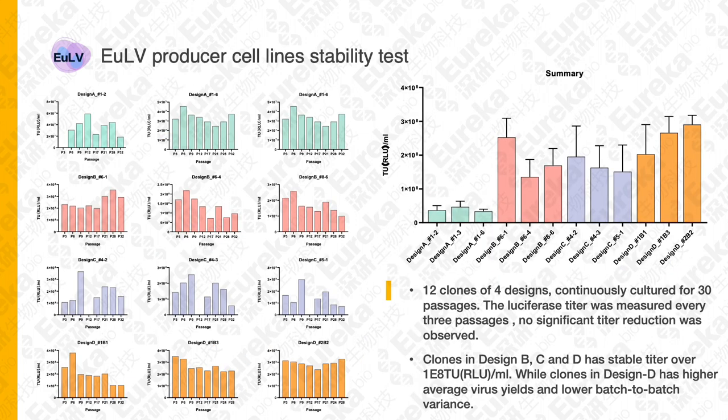Three top clones from each of the four designs were cultured for a stability test over 30 passages, which is 90 days. Luciferase titer was measured every three passages. No significant titer reduction was observed for all 12 clones tested. The clones from design D were slightly better than others, with higher average virus yield and lower batch-to-batch variance.